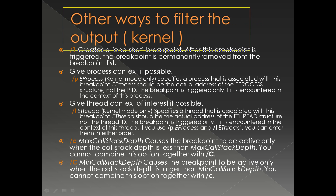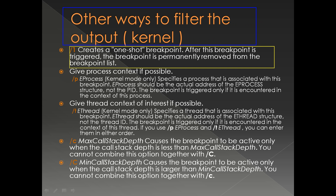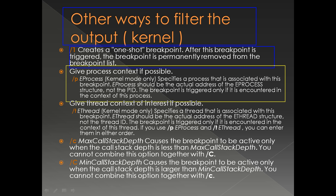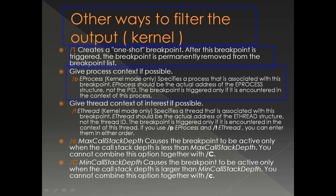There are also a couple of other ways to filter breaks, like specifying a number of hits after which the breakpoint gets disabled. In kernel mode you can give the EPROCESS address — you can specify the process context using /p so the break happens only in that process context. If that function breaks in any other process context, you don't get a break. Similarly you can keep the thread context using the ETHREAD structure.